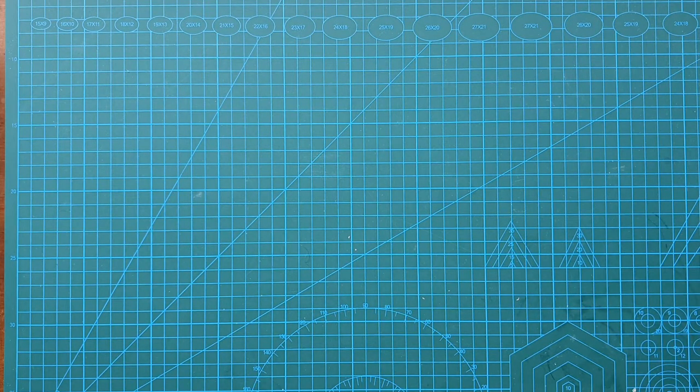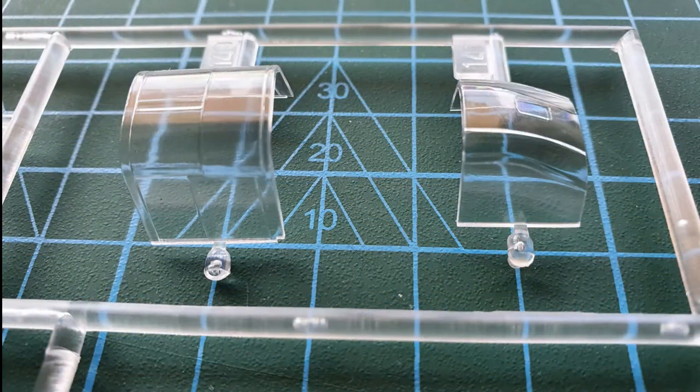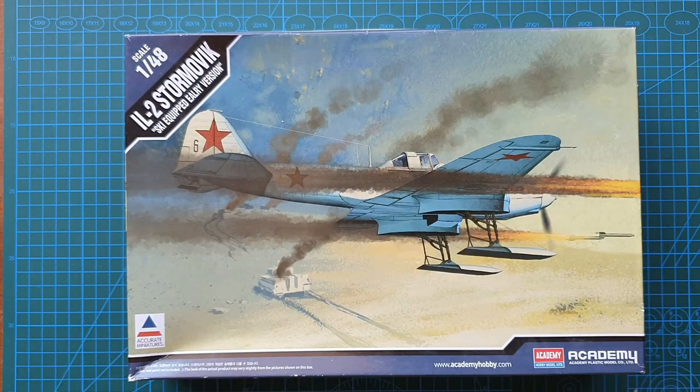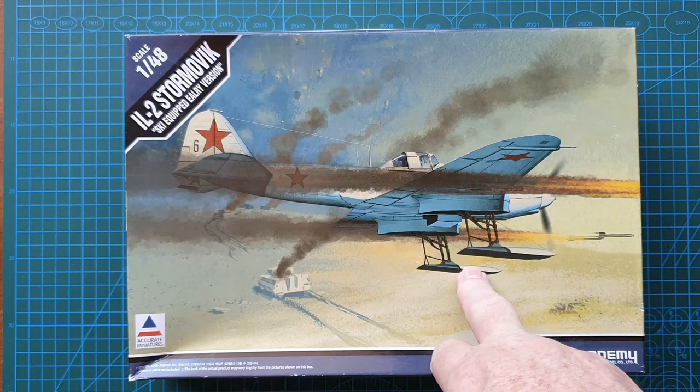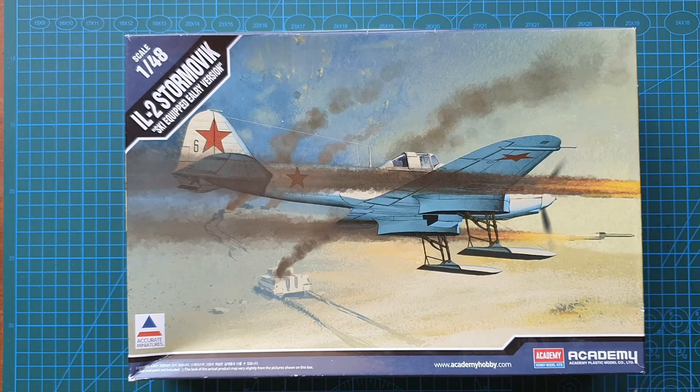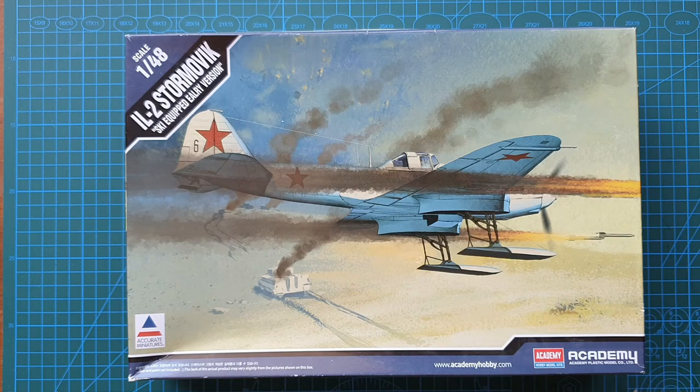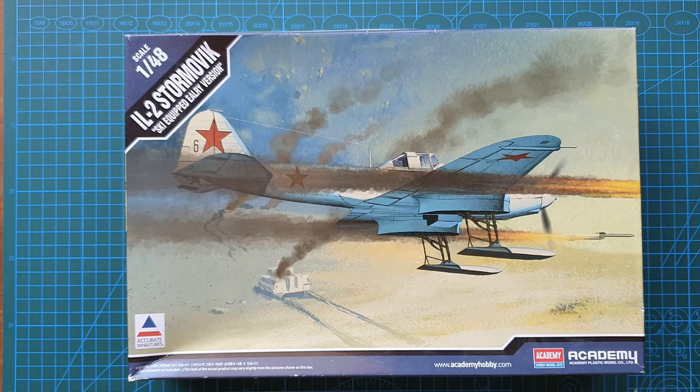There you have it—1:48 scale Academy IL-2 Sturmovik with skis. I'm impressed with this kit. The detail is quite sharp and crisp, and very little flash. There's not much to it, but that's fine—that just means it's going to be an easy build. Means you can concentrate on actually painting it up and making it look pretty decent. I like it. That brings us to the end of this review, and as usual, until next time, take care.